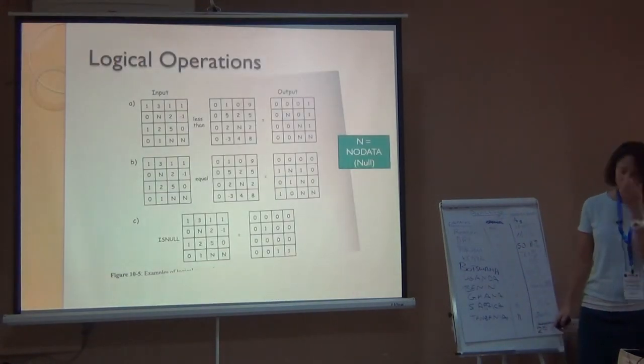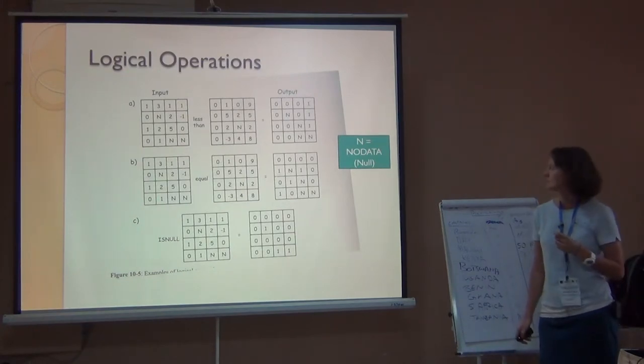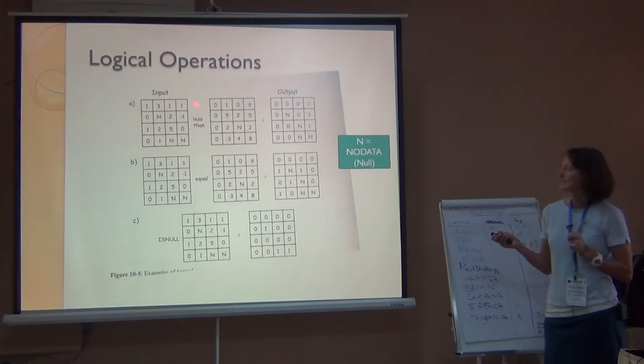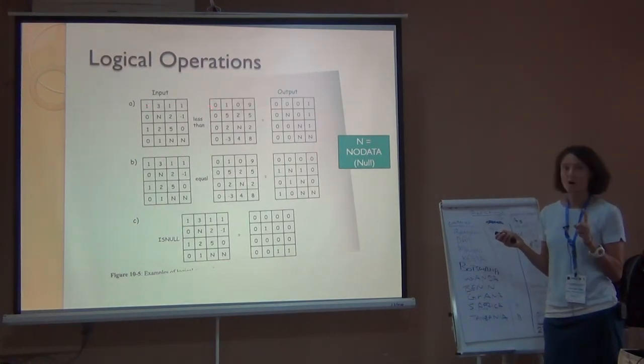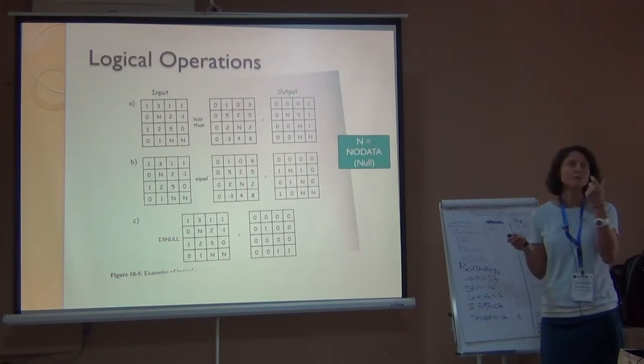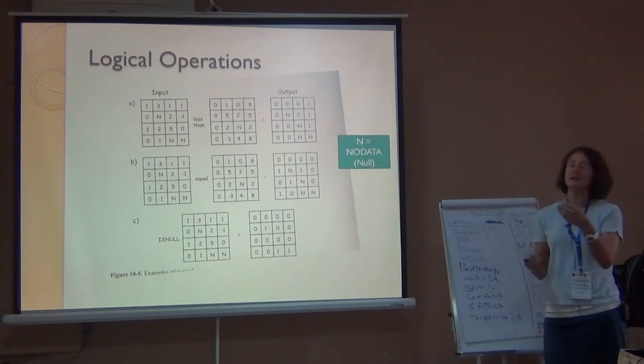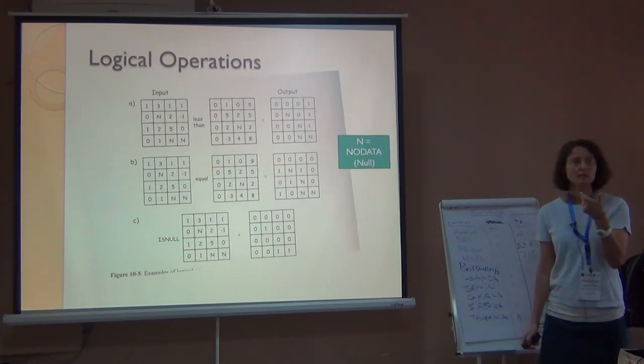You can also do a logical operation. So you can ask for, is this raster at that pixel less than this raster at that pixel? So is one less than zero? No. So you get a zero. So it's a binary, thank you. Binary raster where zero is no and one is yes.